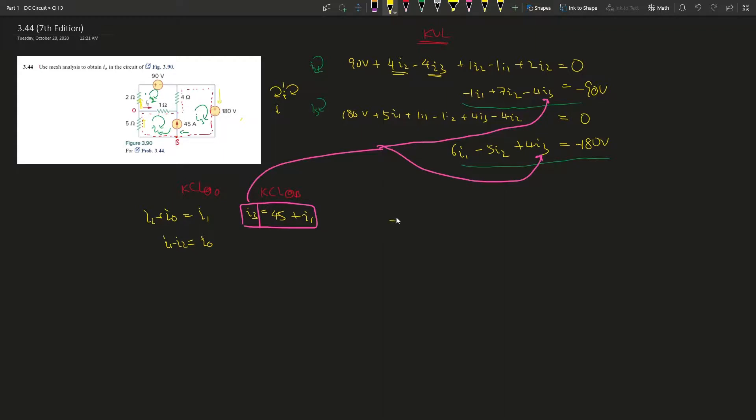So for the first one is negative 1 I1 plus 7 I2 minus 4, 4 times I3. I3 is 45 plus I1, so negative 4 times 4 times 45, 180, and minus I1. This whole thing gives us negative 90 V. Simplify. So negative 5 I1 plus 7 I2, and this whole thing gives you 90 V. Plus 180 V of both sides.